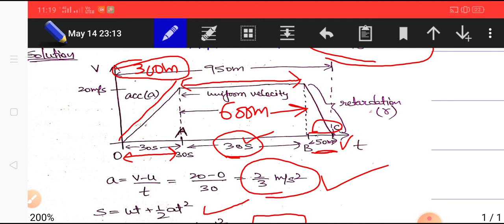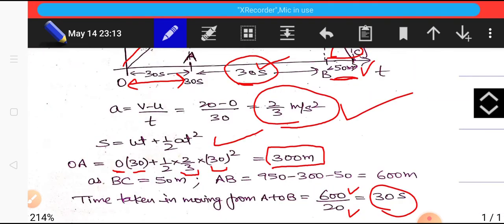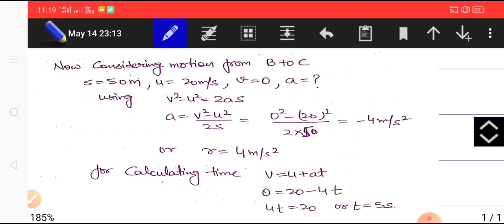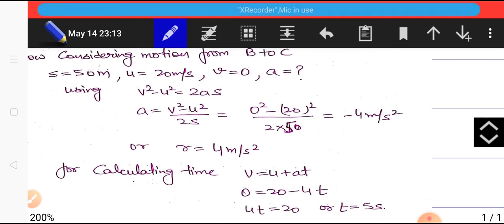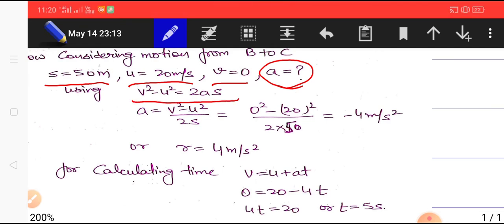Now we are left with only the third portion B to C. Considering motion from B to C, we are given distance is 50 meters, u is 20 meter per second, and finally it is brought to rest so velocity is zero. Applying the equation v² - u² = 2as, we get a = (v² - u²)/(2s). So v is zero, u is 20, s is 50, so we easily get a = -4 meter per second square.